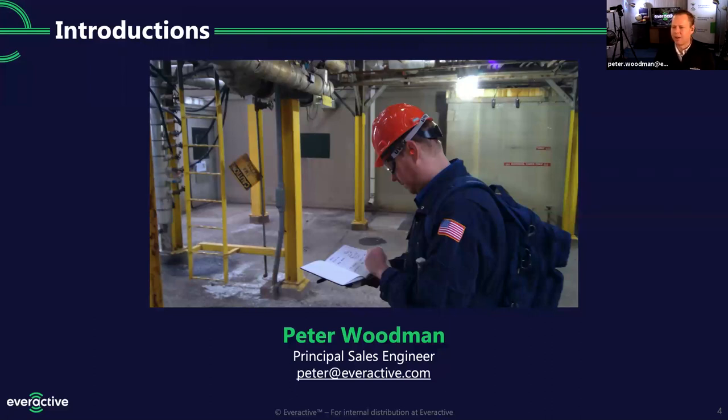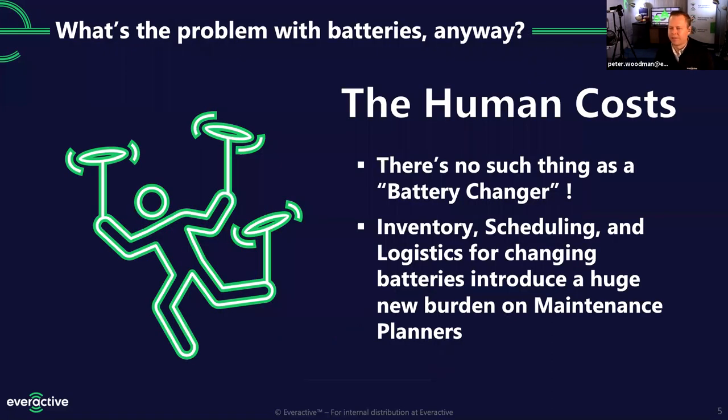First, I want to talk about batteries and why batteries are not a great idea for the Internet of Things in general. There's a big human cost. We've been all over industrial environments around the world and I've never met somebody with the title battery changer. So if you add a battery to a piece of equipment at your facility, you've now made a commitment that someone's going to have to go back and visit that sensor to replace the battery. Particularly in industrial environments, the people doing this are maintenance professionals. They're really highly trained. They could be doing better things than changing batteries. Maintenance planners have to make sure you have these parts in stock, schedule the actual replacements, and do something with the batteries that come back out.